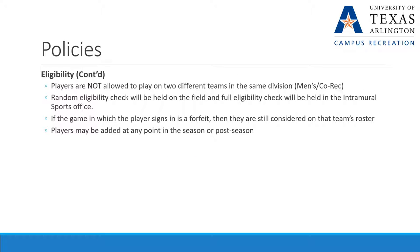Players are not allowed to play on two different teams in the same division. A random eligibility check is held on the field, and a full check is held in the intramural sports office. If the game in which a player signs in is a forfeit, they're still considered to have played in that game and to be on that team's roster. Players may be added at any point in the season or postseason, so should you have problems finding players on a given night, you can still add to your roster.